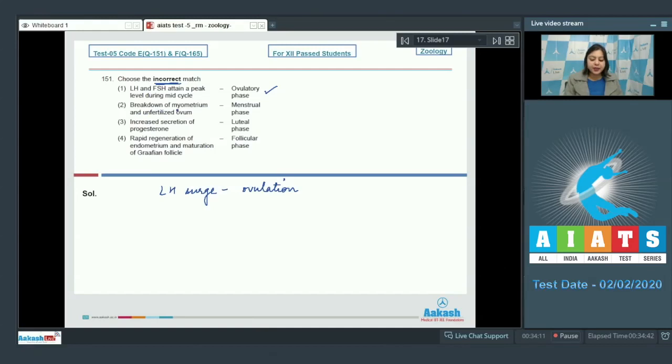Number 2. Breakdown of myometrium and unfertilized ovum occurs during menstrual phase. This is incorrect as endometrial breakdown occurs during menstrual phase.